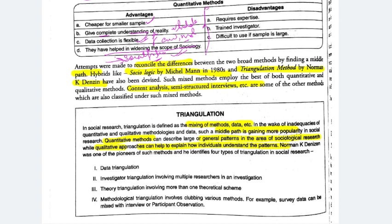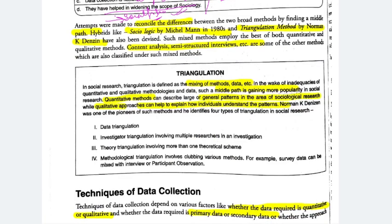The disadvantages are: you need expertise — if you are doing a sociological analysis of some kind, any layman cannot do it; you need trained investigators. And if there are large samples, it becomes difficult. For example, if you are doing unstructured interviews with thousands of people, how many interviews can you do? How much can you record? These are problems.